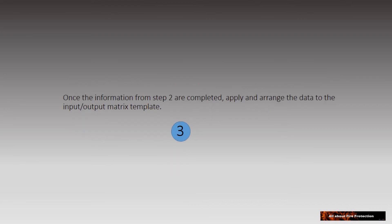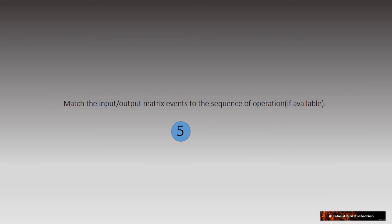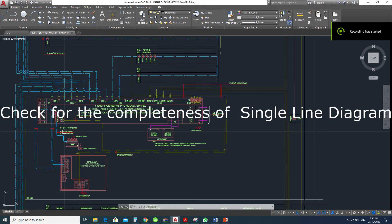Step three: apply the gathered information from step two to the template's input and output section. Step four: mark the required events in the action section as per the sequence of operation. Step five: double-check that the input and output matrix matches the sequence of operation. Once all the above procedures are carefully followed, you are done and ready to make your own example.